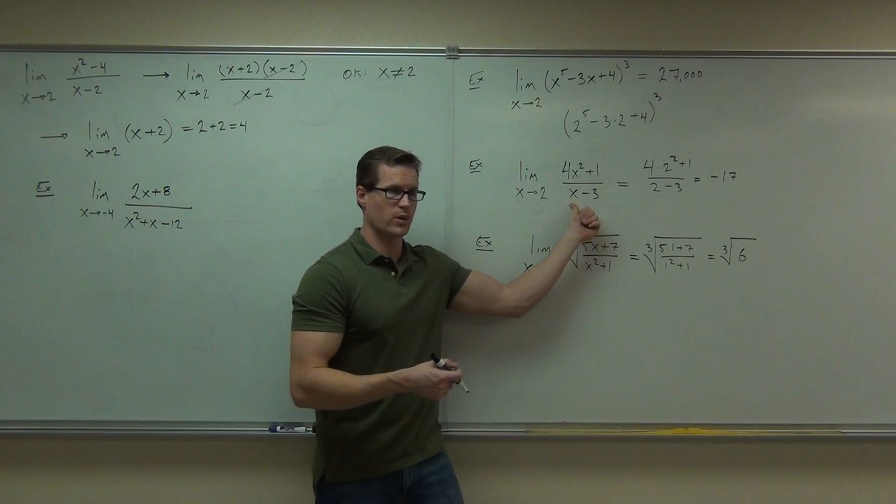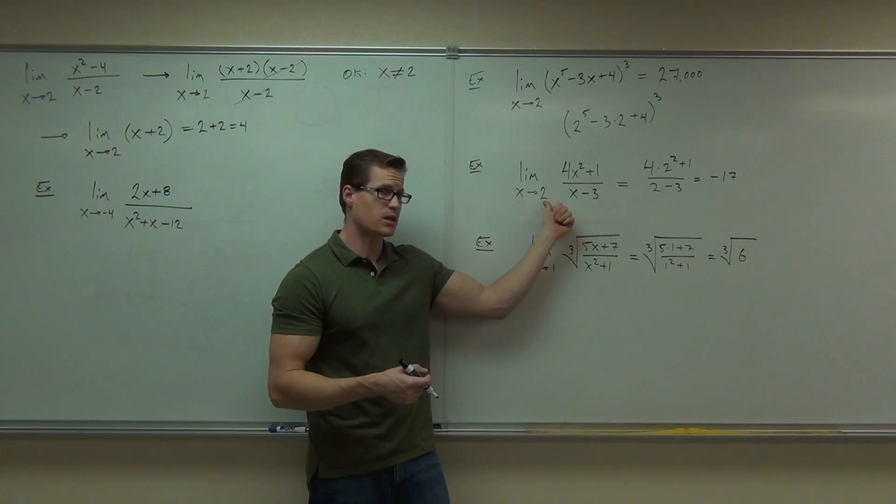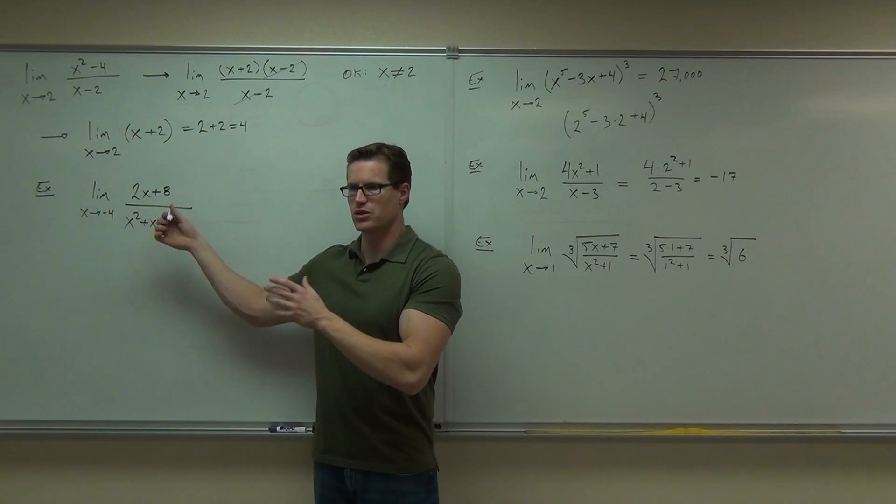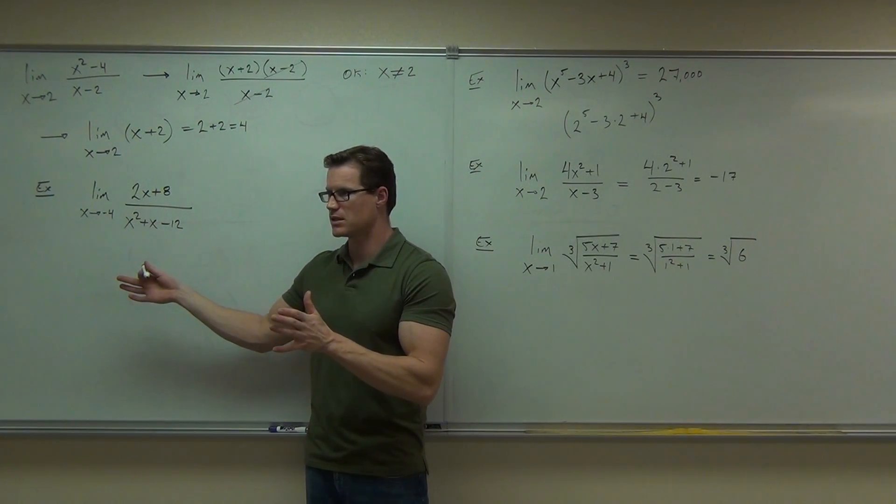Now before you get all crazy and start factoring everything that you see, you might want to just check that point and see if it's even a problem, all right? Because sometimes they might give you that stuff and there's no issue. It'd be like this example. This would have an issue if we were going to the limit of x equals, or x is approaching 3. Wouldn't that be a problem? But we're not, we're going to 2, so there was no problem here. So at least check and make sure you actually have a problem before you start factoring things out. Make sense?